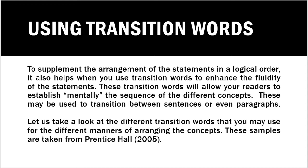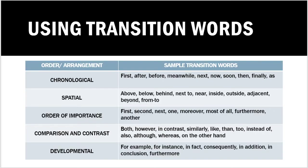Pay attention to the table provided. From a chronological point of view, sample transition words include: first, after, before, meanwhile, next, now, soon, then, finally, and as. For spatial order, you may use words such as above, below, behind, next to, near, inside, outside, adjacent, beyond, from, and to. For order of importance — ranking from most to least important — you can use: first, second, next, one, moreover, most of all, furthermore, and another.